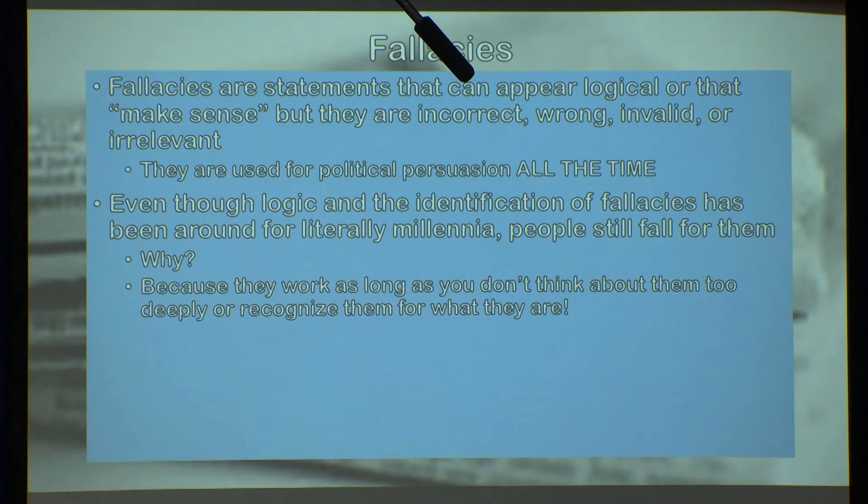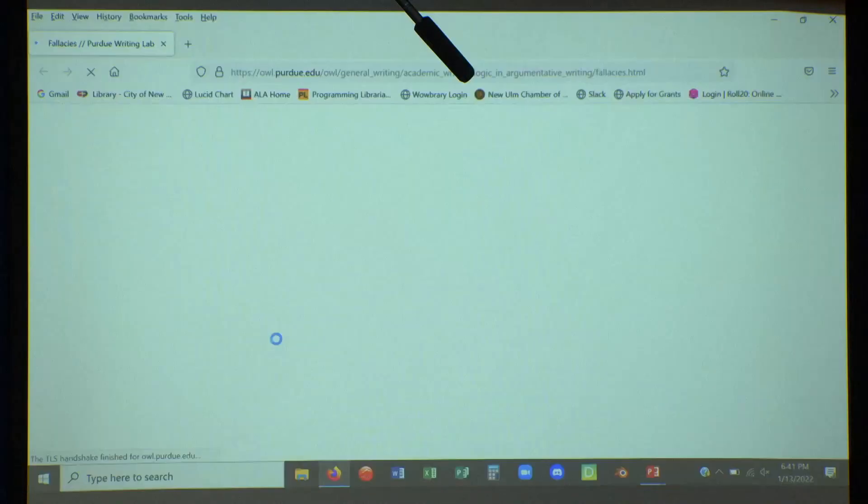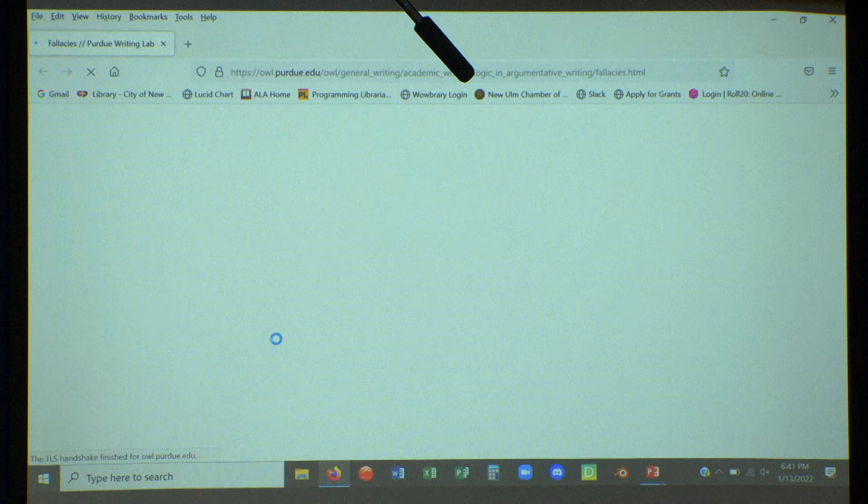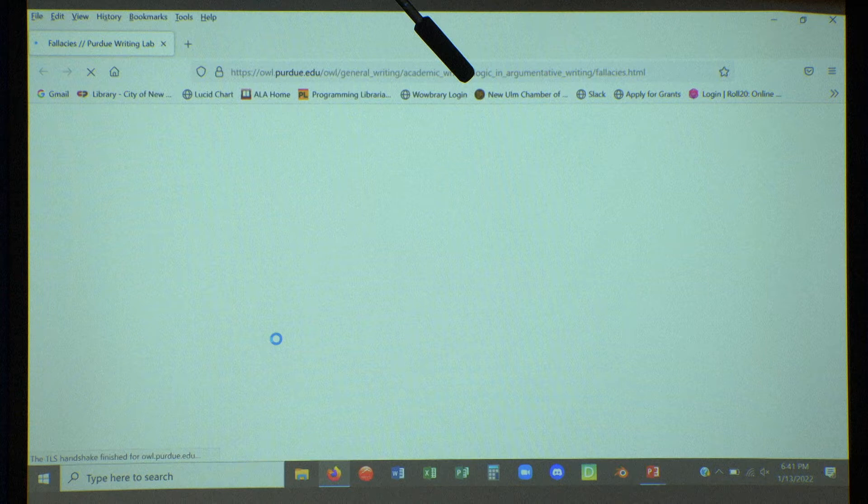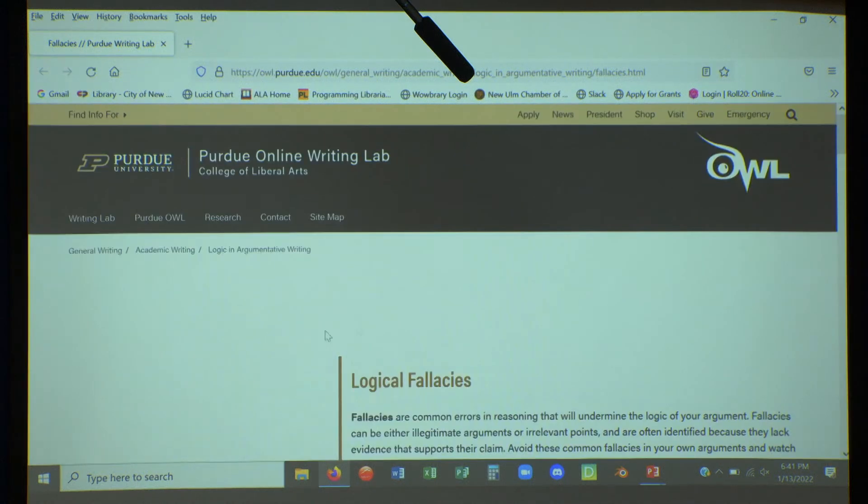Because they work as long as you don't think about them too deeply or recognize them for what they are. It's that thinking deeply part, remembering to go back and think about it again. Last week we talked about metacognitive thinking, the ability to think about what you're thinking about, to recognize what your own thoughts and feelings are, and then to be able to evaluate those thoughts and feelings and understand how you are responding to the stimuli around you. We're going to look at some of the most common, and these are going to be on your sheet. This time we're going to go over to the Purdue OWL Writing Lab. They have wonderful resources.